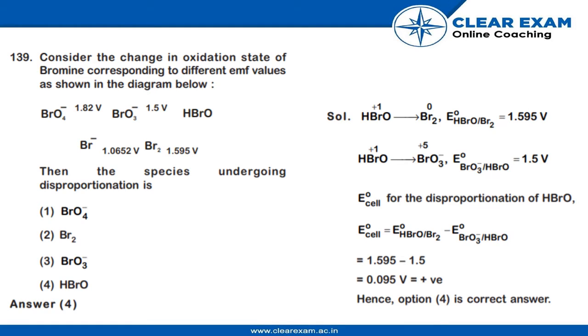Now we have to consider the change in the oxidation state of bromine corresponding to different EMF values as shown in the diagram below. Then the species undergoing the disproportionation is - we know that when HBRO breaks down